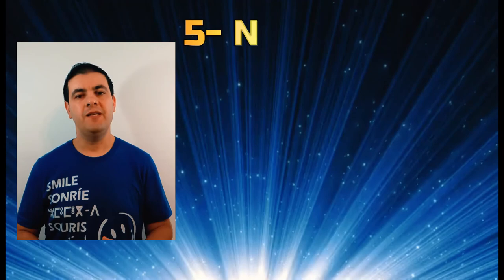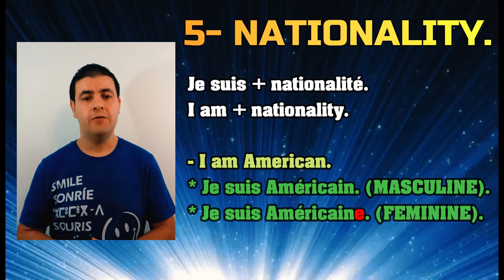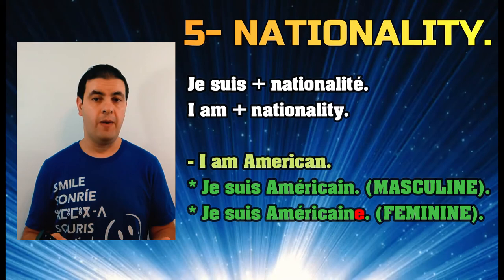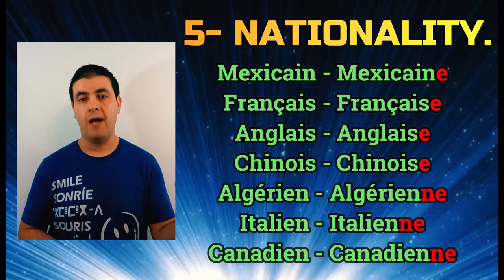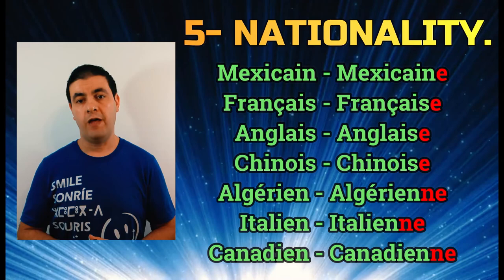The next sentence is how to say your nationality. You use the expression 'je suis' — I am — plus the nationality. For masculine you say 'je suis américain,' and for feminine you say 'je suis américaine' — you add an 'e' for the feminine. I have a list of nationality adjectives you can use; just pick the masculine or feminine form depending on who you are.